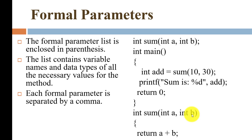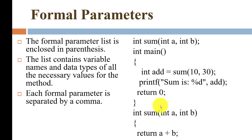You can write any number of parameters inside the function as arguments, and that is what we refer to as formal parameters. If there are one, two, or more than two variables being passed inside the round brackets, they are separated by a comma.